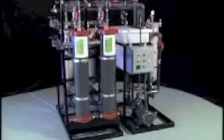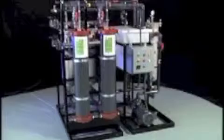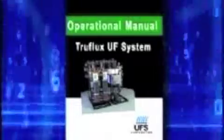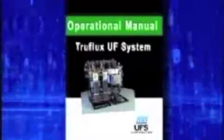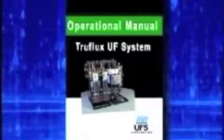Your UF machine has been assembled and tested. It was then match marked prior to disassembly for packing, crating and shipment. A list of minimum system requirements by UFS, as well as the equipment by others, can be found in the Operational Manual supplied with this unit.